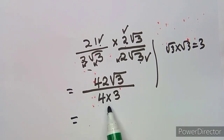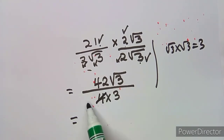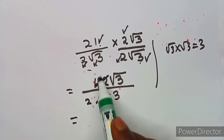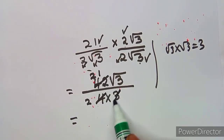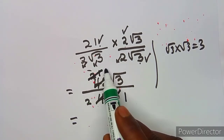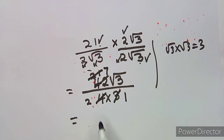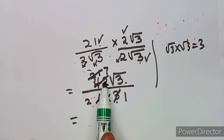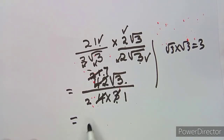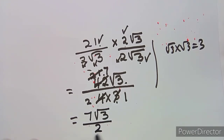You can simplify further at this stage — you can reduce. Two is common: two into four is two, two into 42 is 21. Then two into four is two, two into two is one. Reduce again by three: three into three is one, three into 21 is seven. Take note — you do not have the power to reduce a number under the square root with a number outside the square root. In the numerator you are left with seven and square root of three, so your answer is seven square root of three over two.